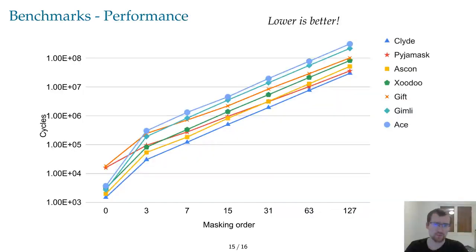We benchmarked the implementations generated by Tornado for the aforementioned 11 NIST candidates in both bit-sliced and N-sliced modes. In this talk though, we will only focus on the N-sliced performance. Please have a look at the paper for the bit-slice benchmarks. We report in this chart the performance of each cipher in cycles on an ARM Cortex M4 depending on the masking order. Note the logarithmic scale on the vertical axis. Without masking, performance range from barely more than 1,000 cycles for Clyde and Ascon up to more than 10,000 cycles for Pyjamask and Gift.